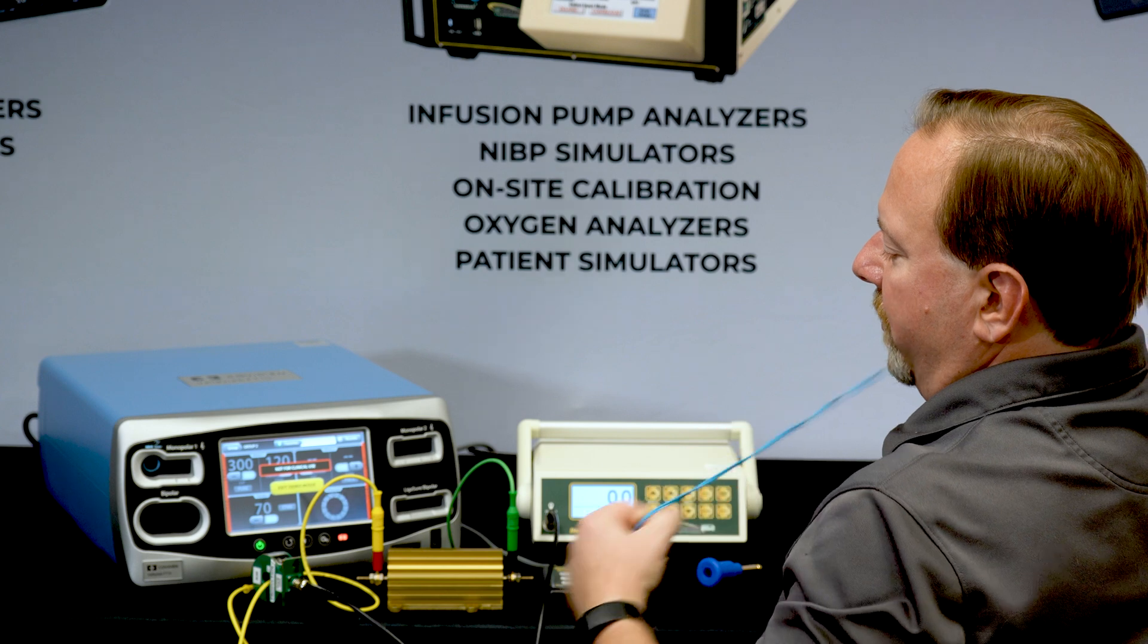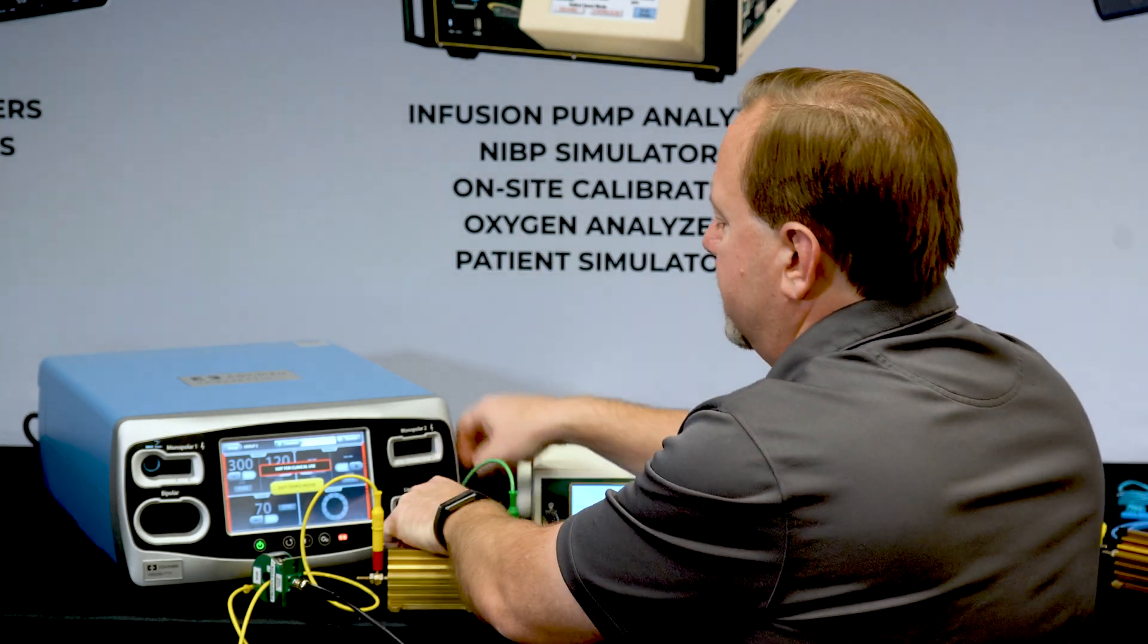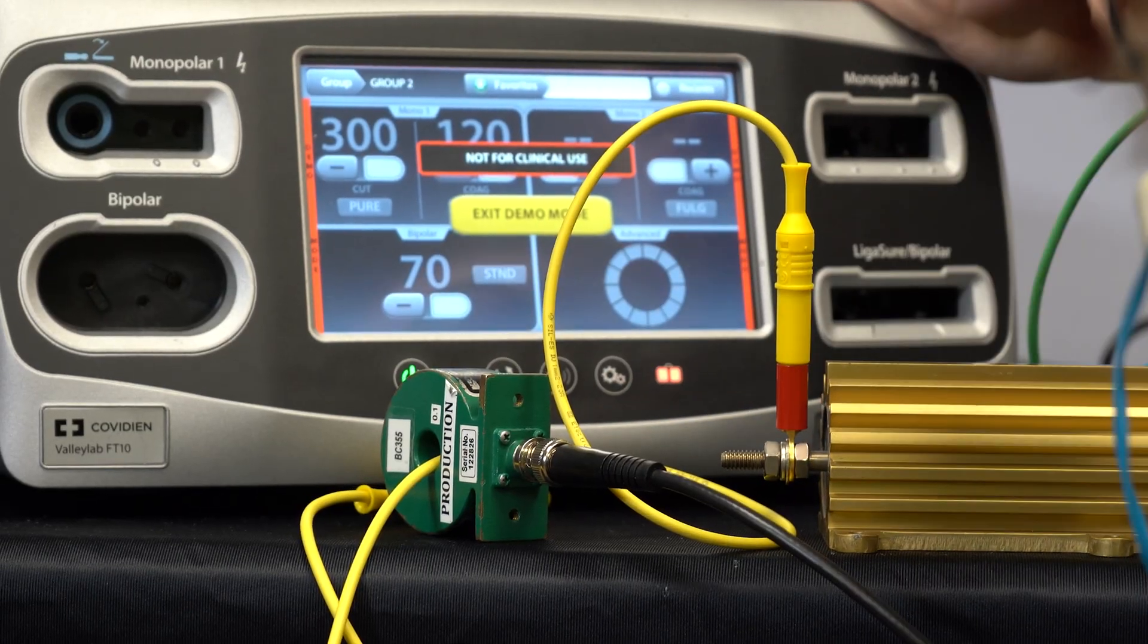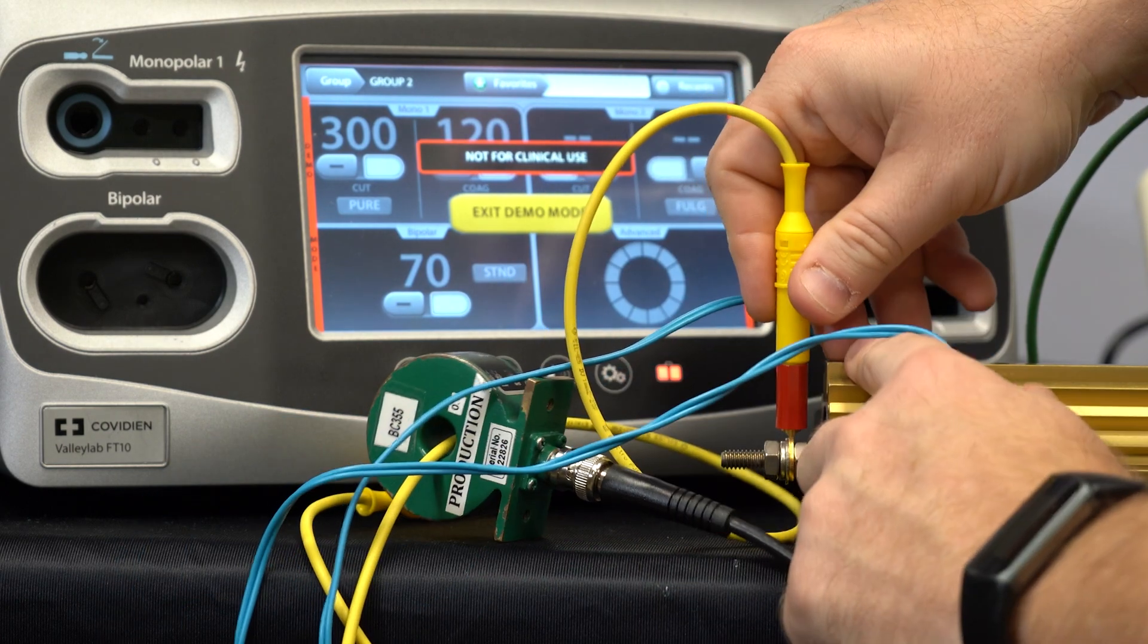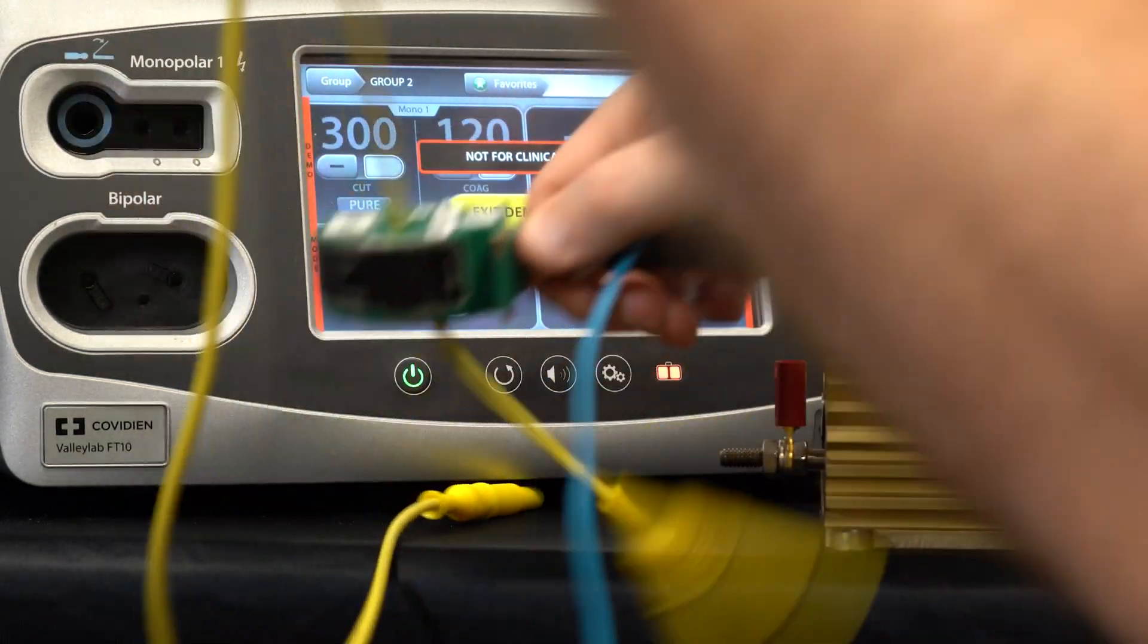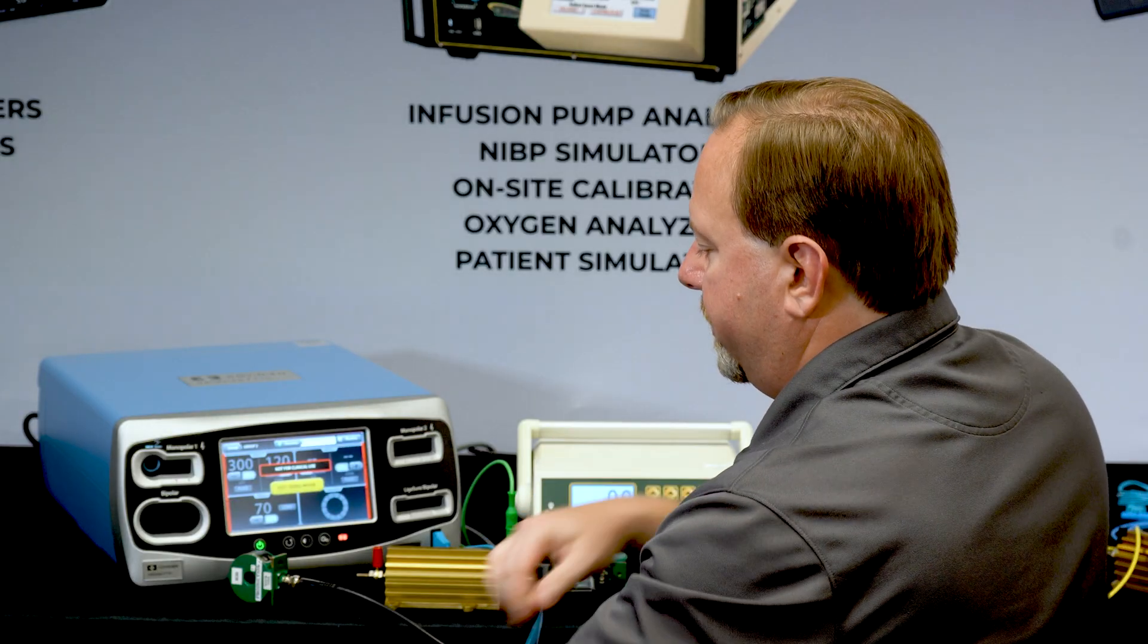The other measurement we need to make for leakage on monopolar one is on the REM port. So we need to make sure that the REM port does not have too much current going to ground. So for this test I'm going to remove the yellow electrode that I had through the current transformer and I'm going to connect my return electrode through there.